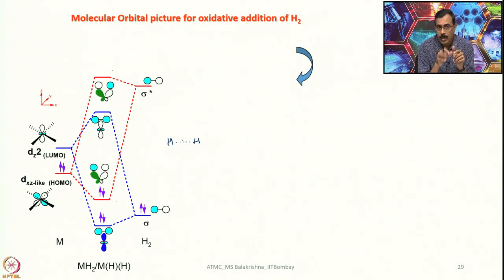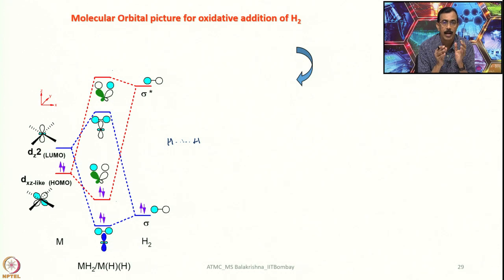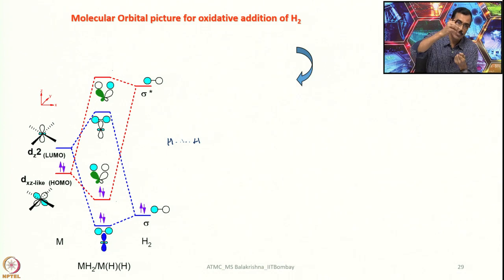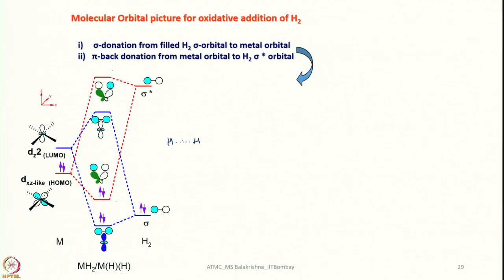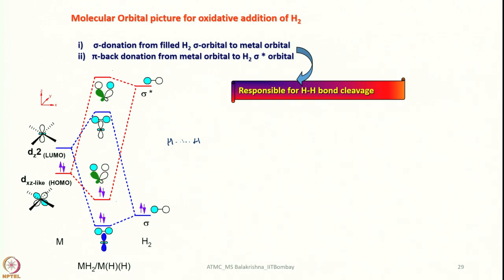These two processes — σ donation from H₂ to the metal and π back-donation from the metal to the H₂ σ* — together weaken and eventually break the H–H bond completely. In a conventional reaction without a metal, you cannot achieve this. When H₂ approaches the metal, electrons between the two H atoms are pulled toward the metal while metal electrons are added to σ*. This two-fold effect results in complete H–H bond cleavage and thus oxidative addition.